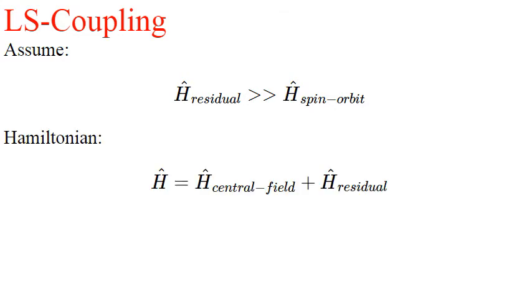LS coupling. In LS coupling we assume that the residual part of the Hamiltonian is much larger than the spin-orbit part. In which case our Hamiltonian becomes this.